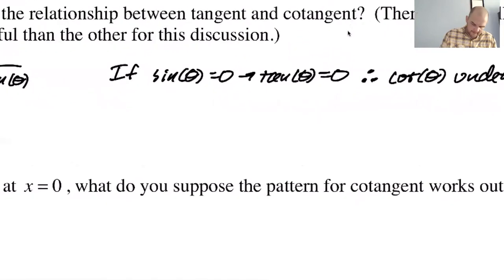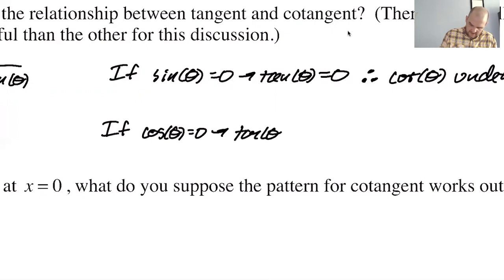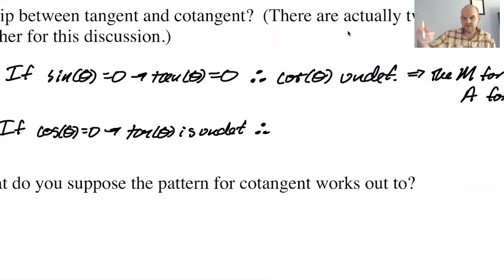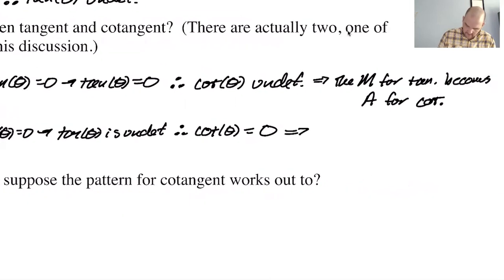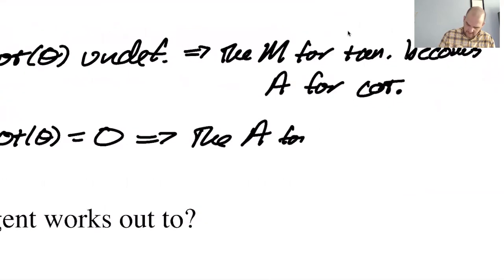On the other hand, if cosine equals zero, then tangent is undefined. So then cotangent, which has cosine in the numerator, will be zero. So cotangent will be zero, which means that A, the asymptote for tangent becomes the middle point for cotangent.